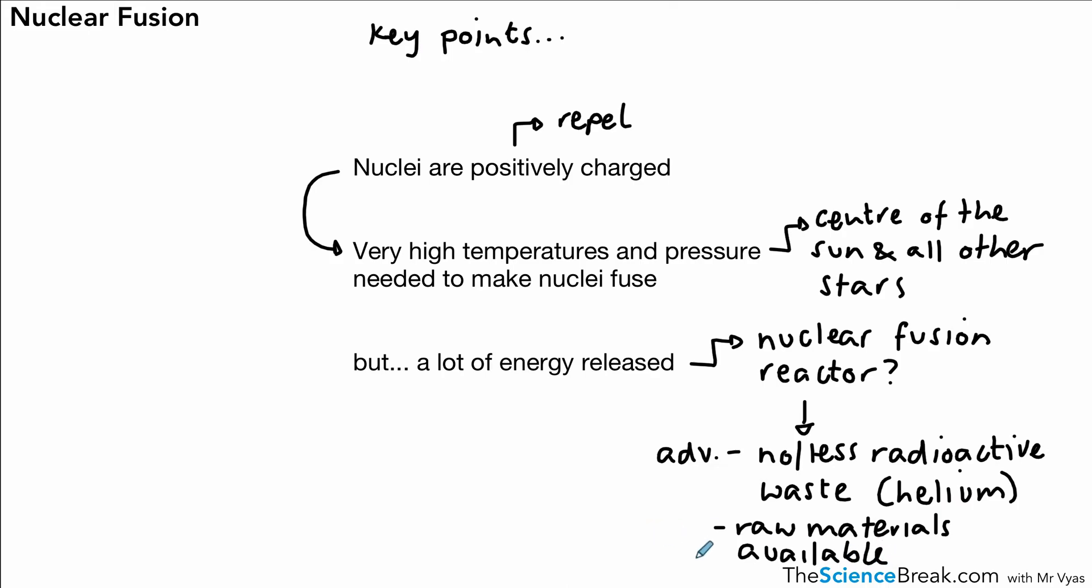But we have a problem because while we have those two advantages, we still need very high temperatures and pressure to make the fusion reaction happen. And at the moment it's not possible. We can make nuclear fusion happen, but currently the amount of energy needed to make fusion happen is more than the energy that is released. So obviously that's not going to work very well for a nuclear reactor to make electricity.